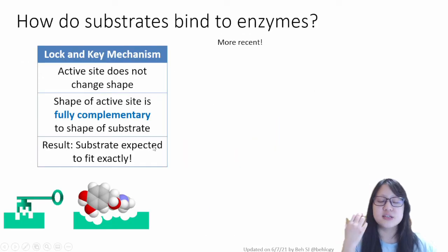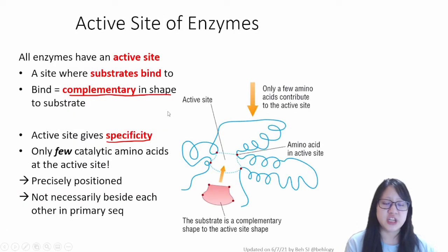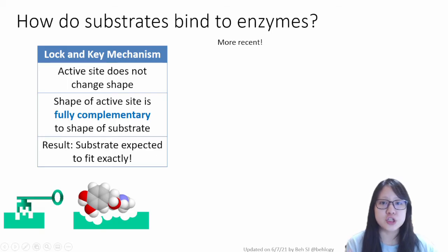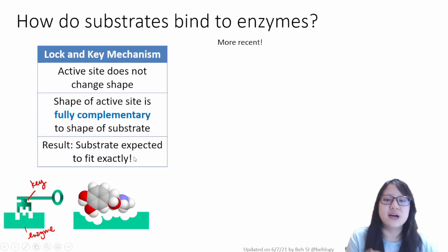Now more about structure. Now we know that the active site is complementary in shape to the substrate, and this here is the traditional model. They are the lock and key mechanism. It shouldn't be new to you. When we say lock, we mean enzyme, enzyme's the lock, and key refers to the substrate. In this model, the active site does not change shape, and the shape of the active site is fully complementary to the shape of the substrate. The result is you pretty much expect the substrate to fit perfectly into the active site.